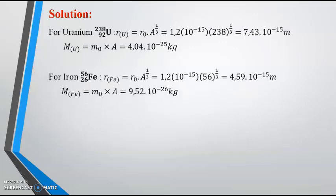For iron, we can use the same method. And we can conclude that the radius of iron is equal to 4.59 times 10 to the power minus 15 m, while the mass of iron is equal to M0 multiplied by A equal 9.52 times 10 to the power minus 26 kg.